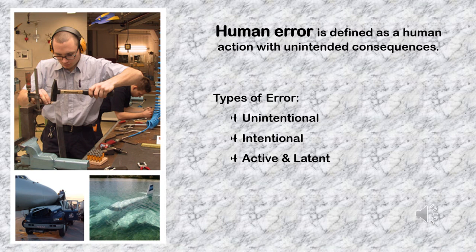Human error is defined as a human action with unintended consequences. Human errors cannot be eliminated, but they can be managed. Unintentional errors can include errors in one's actions, opinions, or judgment caused by poor reasoning, carelessness, or poor judgment. An example of an unintentional error would include misreading a given torque value as 24 foot-pounds rather than 24 inch-pounds.